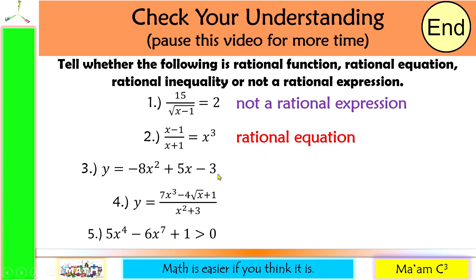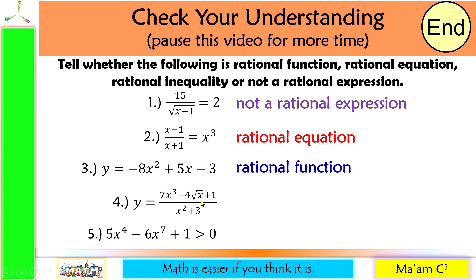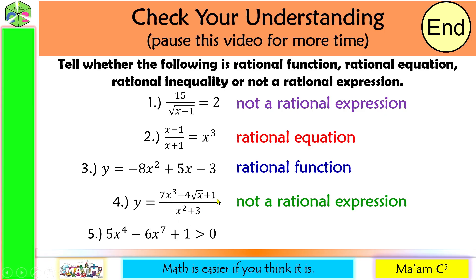Number 3: this is a polynomial — the denominator is the invisible 1. We have y here and an equal sign, so this is a rational function. Number 4: is this a polynomial? No, it's not because we have square root of x. When converted into fractional exponent, this is x raised to one-half, and one-half is not an integer, so this is not a rational expression. Though the denominator is a polynomial, since the numerator is not a polynomial, it is not a rational expression. Last one: we have a polynomial and another polynomial with an inequality symbol in between, so this is a rational inequality.